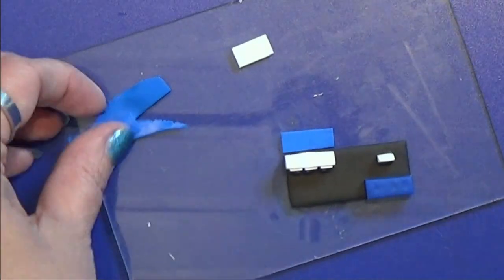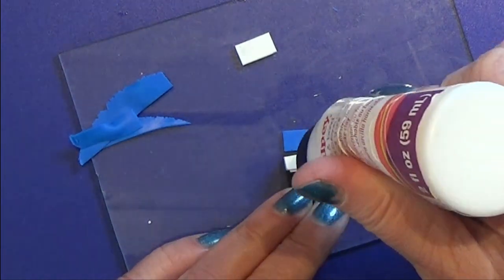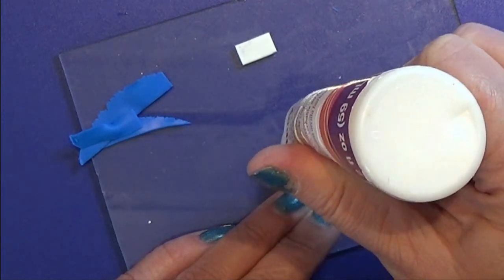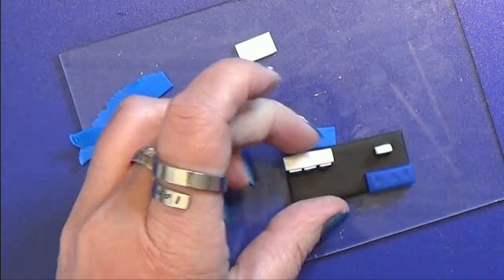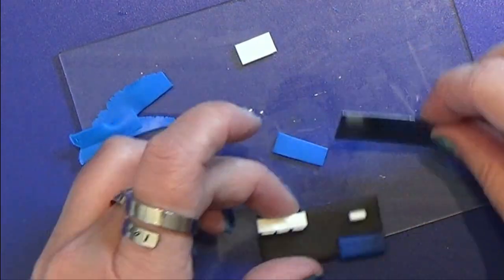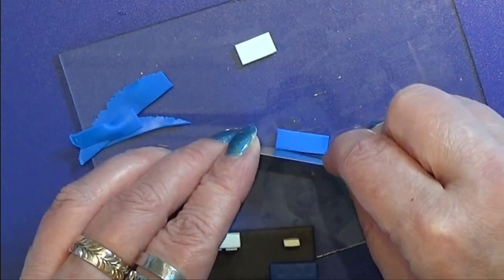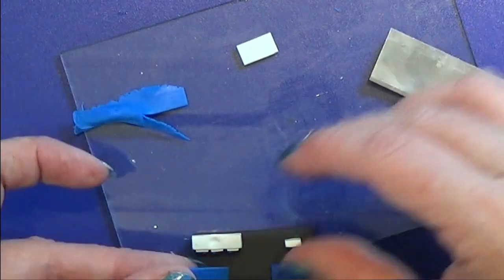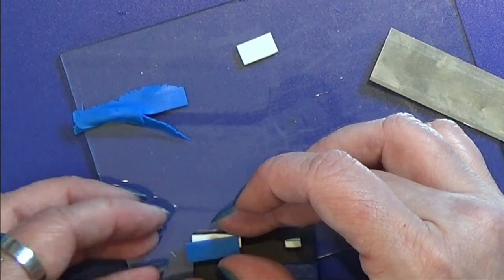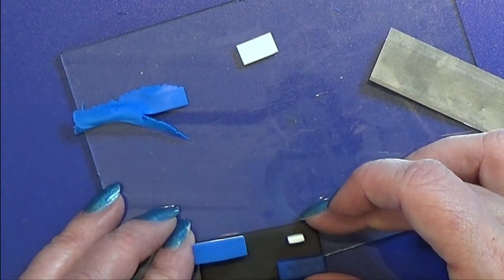Then I rolled out a piece of blue clay on the thinnest setting on my pasta machine and I'm going to use that for the table top for this little kitchen furniture. I made a hole in the furniture so I can make a little hole for a sink in this part as well.